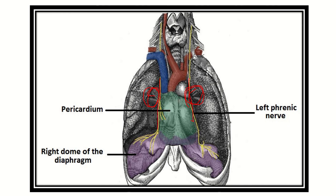This nerve will be the most anteriorly seated structure in the hilum of the lung region, or root of the lung region. On the left side it is the left phrenic nerve, and on the right side it is the right phrenic nerve. So the phrenic nerve is the most anteriorly seated structure at the root of the lung. This phrenic nerve finally reaches the diaphragm and supplies it.